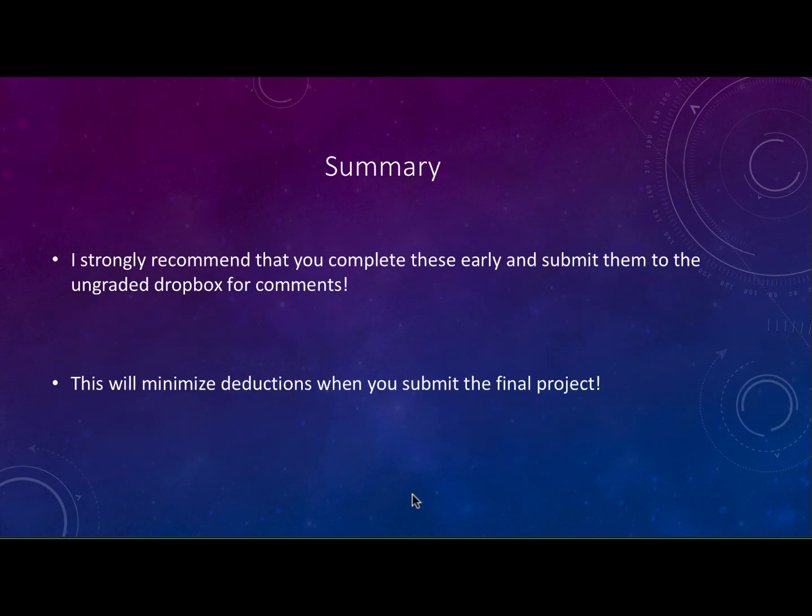So finishing up here, I've shown you how to go about doing the calculations. I do strongly recommend that you complete these early as you can and submit them to the ungraded Dropbox. Again that's not required. If you're perfectly comfortable doing the calculations on your own you can submit these directly when you submit the project and there is no deduction. This Dropbox is for your help in me giving comments to you. However I do strongly advise that because it does minimize deductions. I can tell you that this would be wrong and you would lose points and you have a chance to make those corrections earlier.